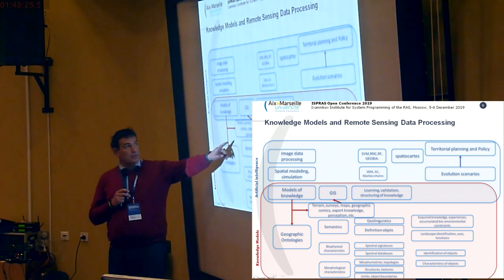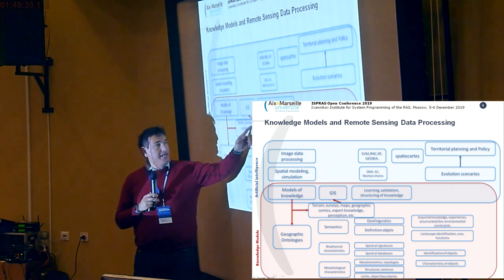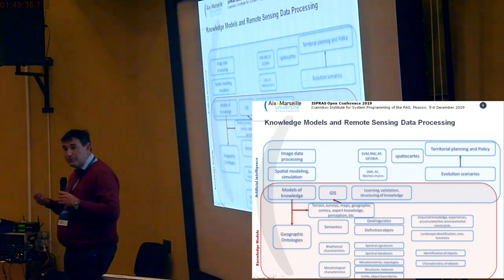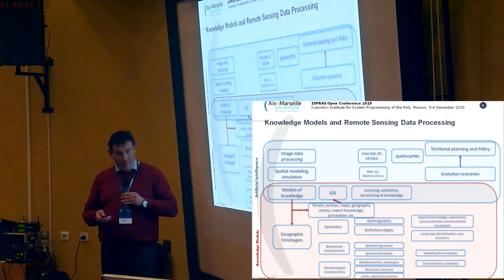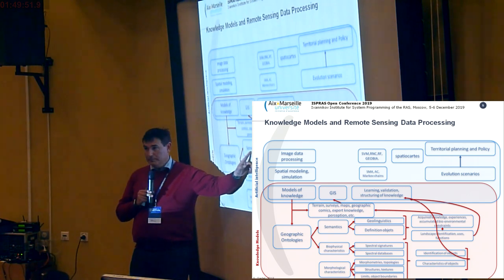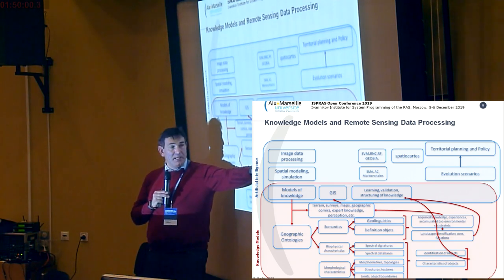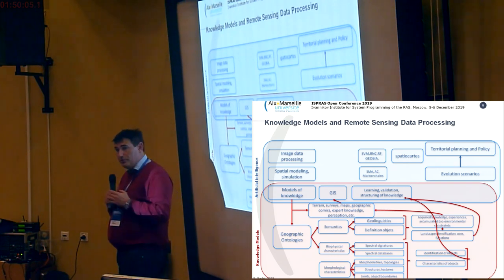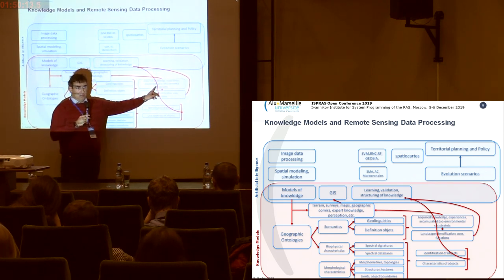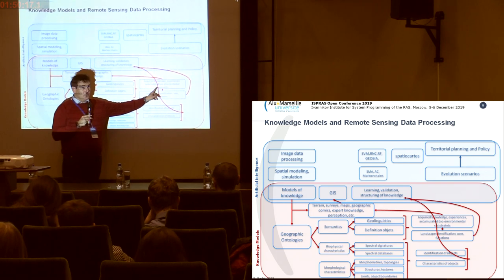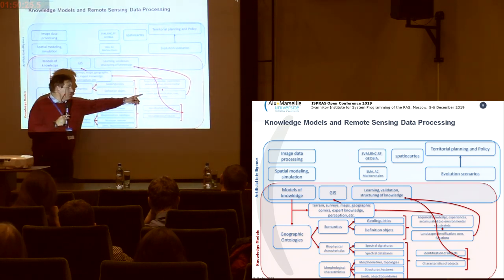One part of this is made by the classical approach: going on expeditions, generating maps, integrating the knowledge of local populations — for example in the Arctic. Also, in terms of semantics and geolinguistics, this is one of the most promising approaches — defining objects, building ontologies, and generating a specific database about the knowledge and experience of the people according to their language and environment. From this, we can generate landscape classifications.